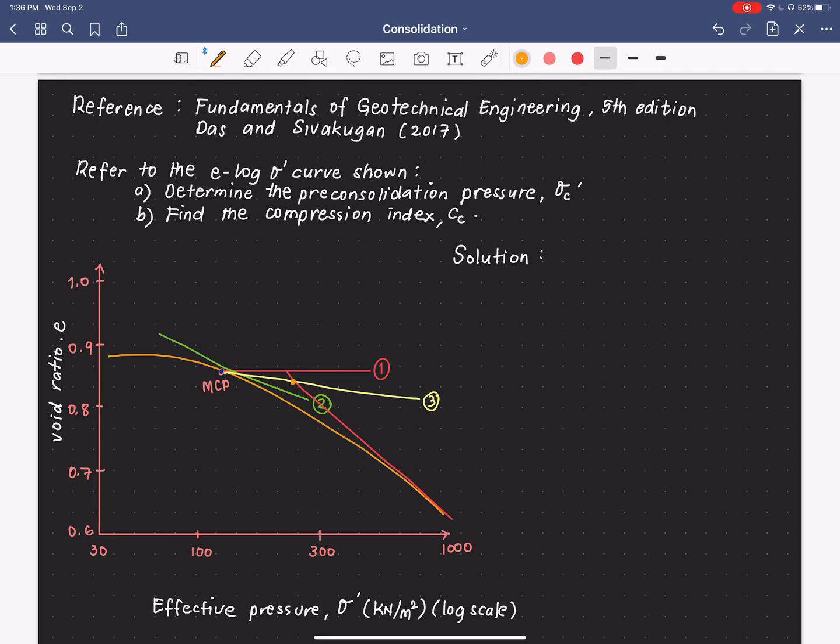And then, from here, we extend this line down to the x-axis, which is the effective pressure. And from there, this is our preconsolidation pressure.